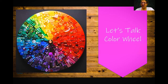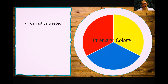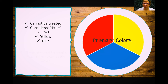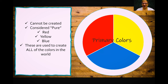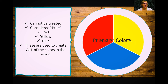Primary colors cannot be created — they are found in nature; you can't mix two things together to make red. They are considered pure: red, yellow, and blue, and they are used to create all the colors in the world. If you really want to challenge yourself, take those three color crayons and make a color wheel. When I'm in a classroom that's what I have my students do — create a color wheel using just the three primaries and get the balance right to create all other colors.